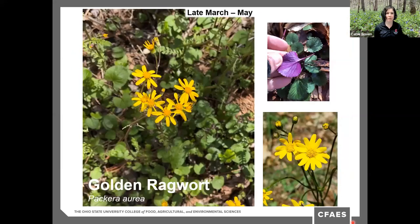Golden ragwort blooms late March through May — a longer blooming time than some species. As you might guess, it's in the daisy family and is also known as golden groundsel. It's found growing in forests, swamps, ravines, and riparian areas in eastern North America. The plants consist of rounded, year-round dark green foliage, with the bottom of the leaves often having a brilliant purple color. The flat-topped flower clusters appear in spring, 10 to 14 inches above the foliage. Many bees, flies, and beetles use this plant as a nectar source, and it is host to the northern metalmark butterfly.